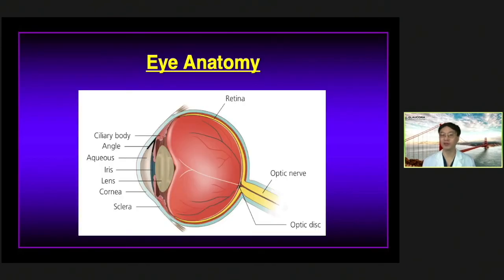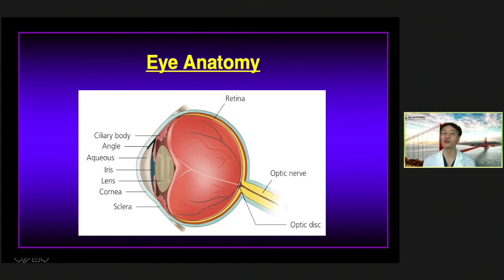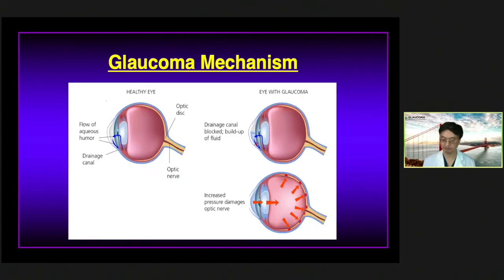Those are excellent questions. Let's start off with this diagram of the eye. The front of the eye is made up of the cornea, which is the window of the eye. Behind that is the iris, which gives our eye its color. Behind that is the lens, which, as we age, forms a cataract. The back of the eye is the retina, which has nervous tissue that joins together and forms the optic nerve, which goes back to our brain and tells us what we see.